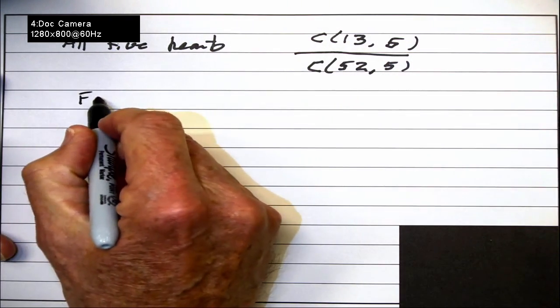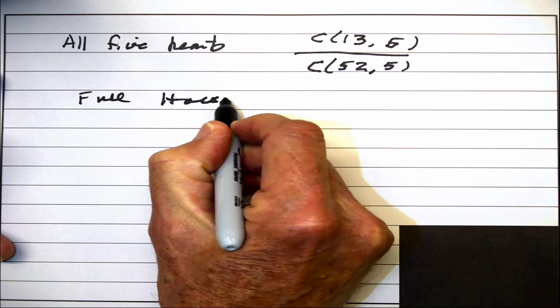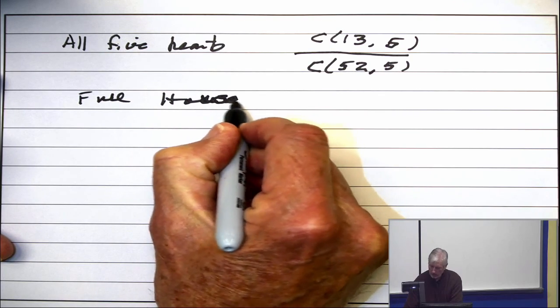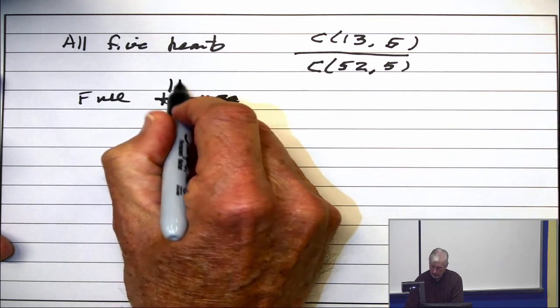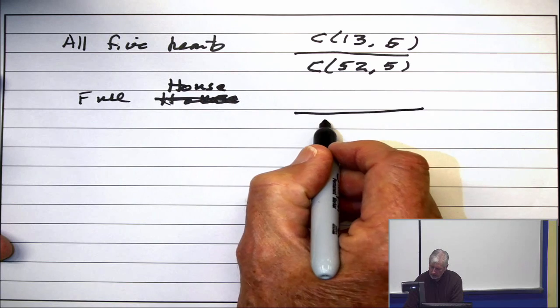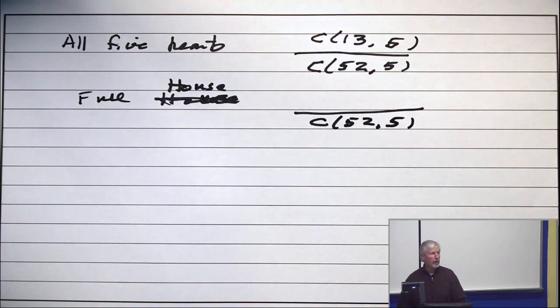So, the probability of getting a full house, H-O-U-S-E. Let's try that again. House. Okay. The denominator is, once again, C(52, 5). What's the numerator?